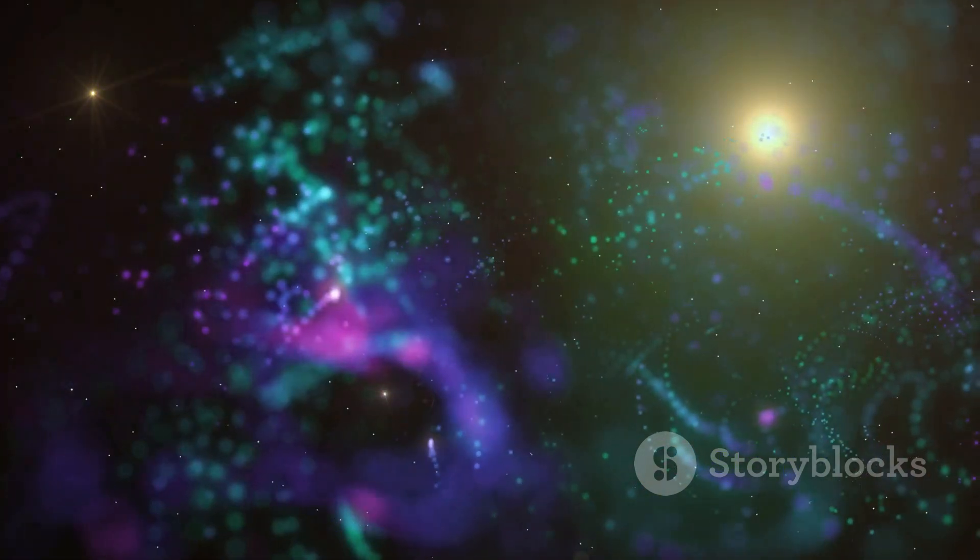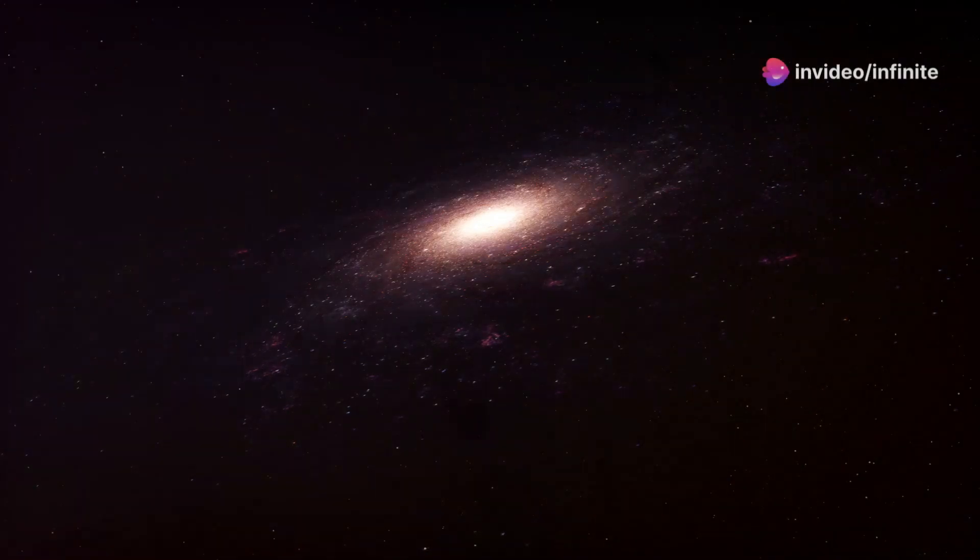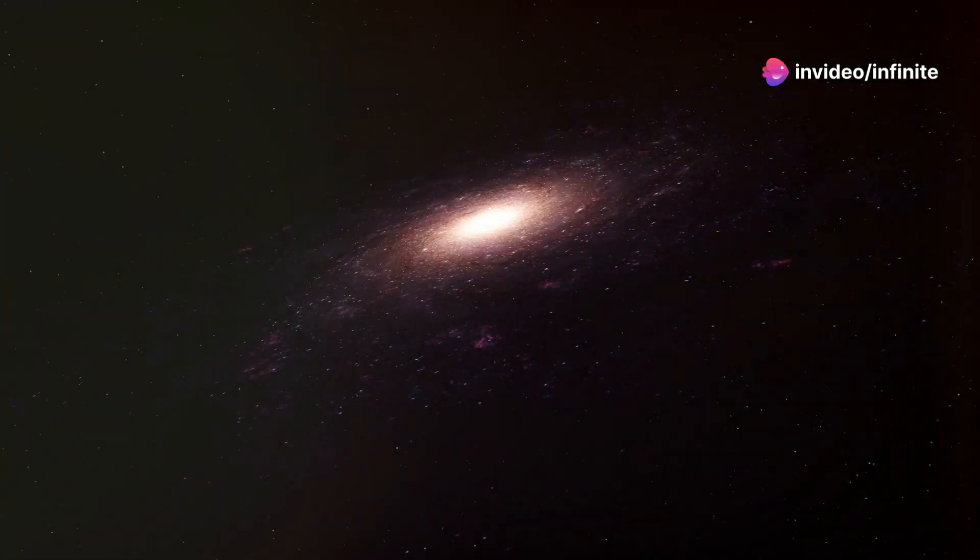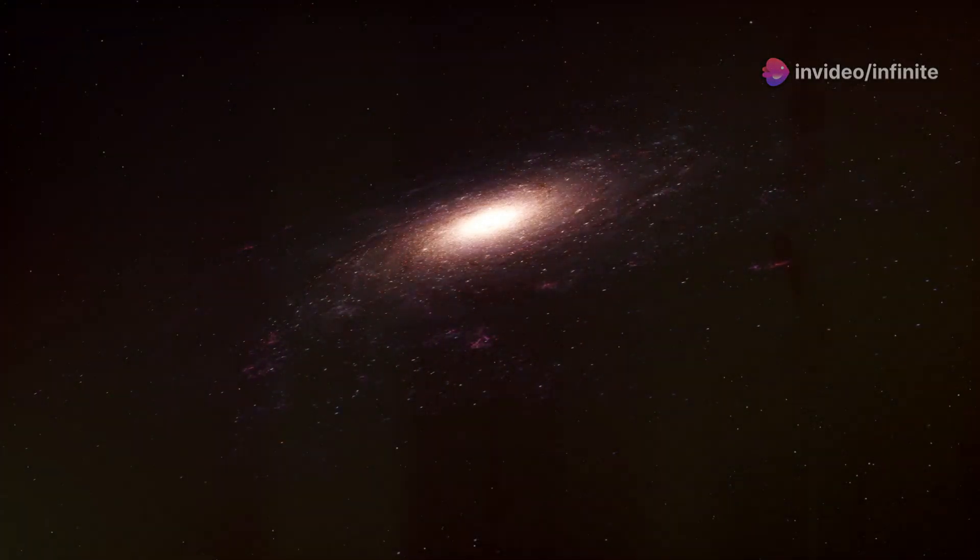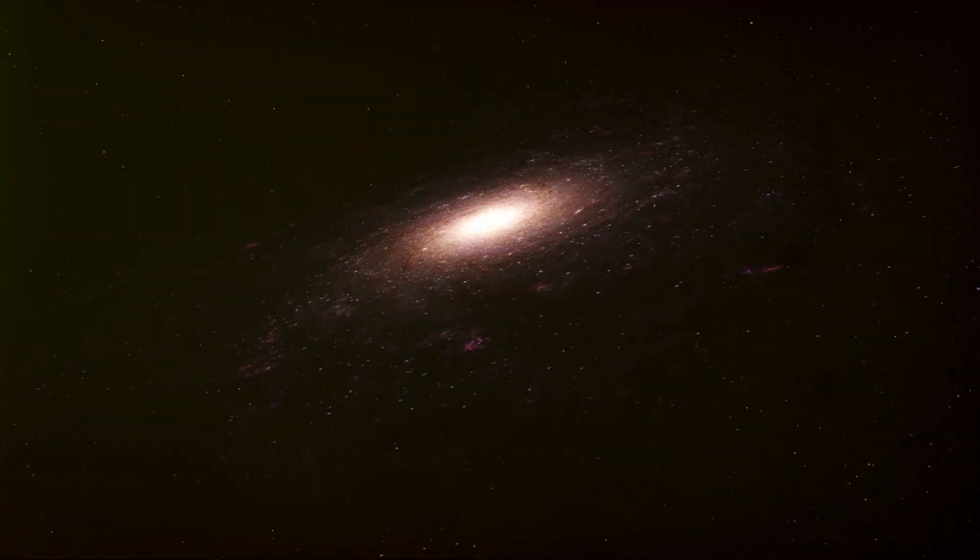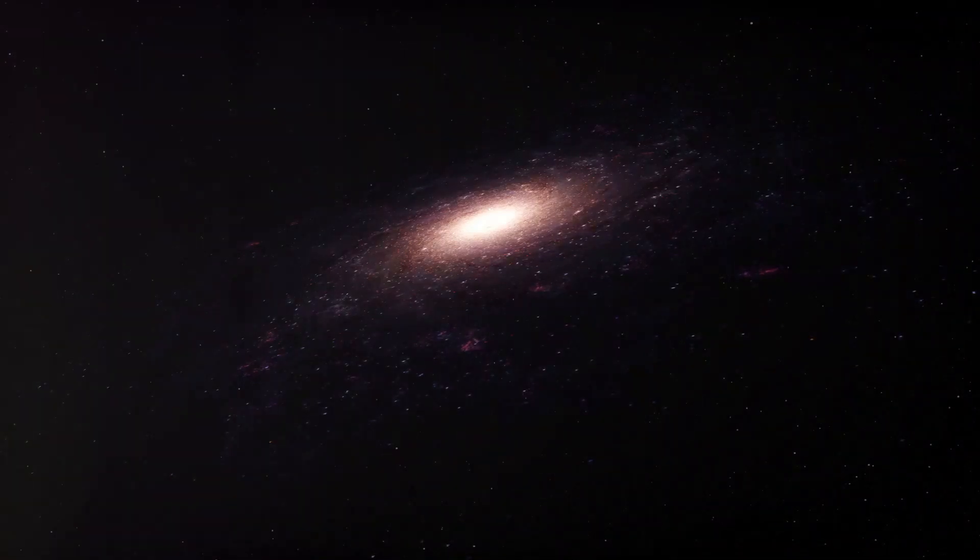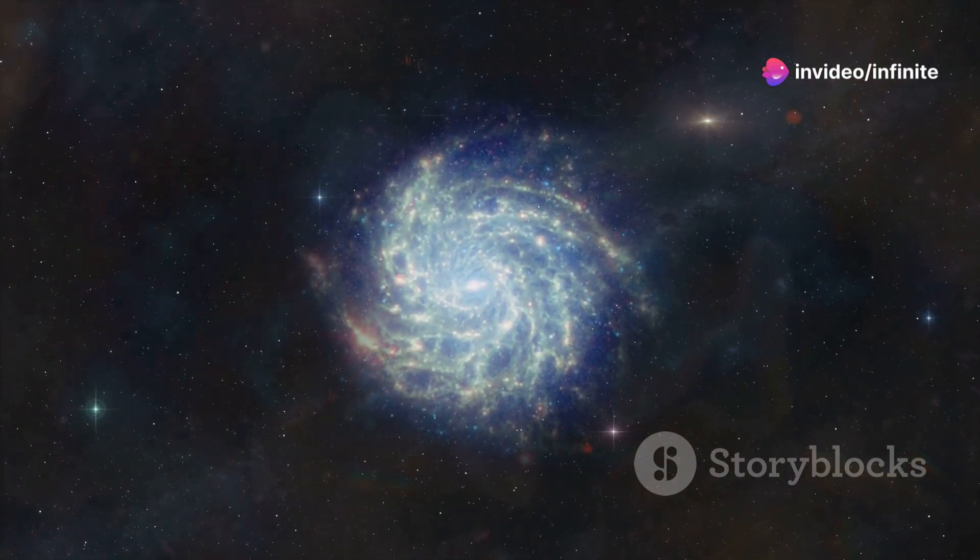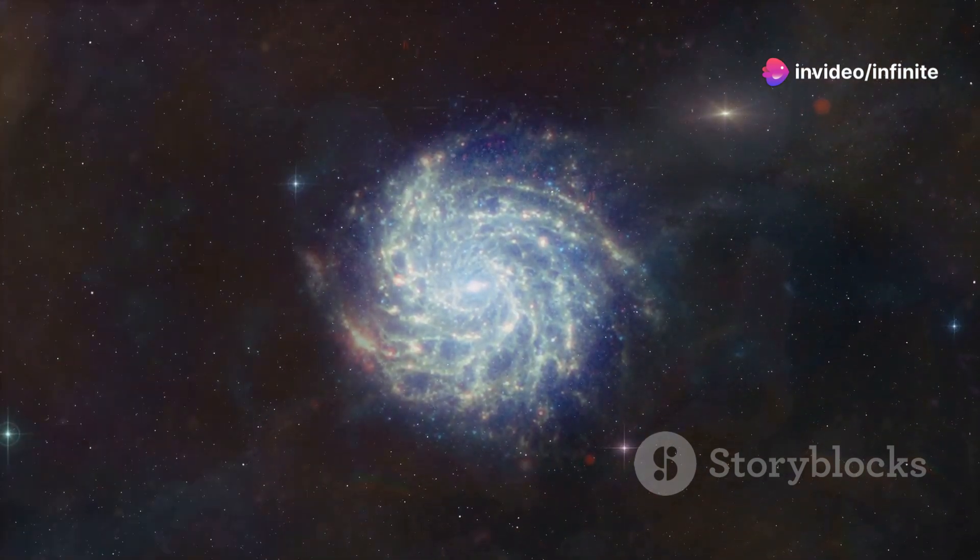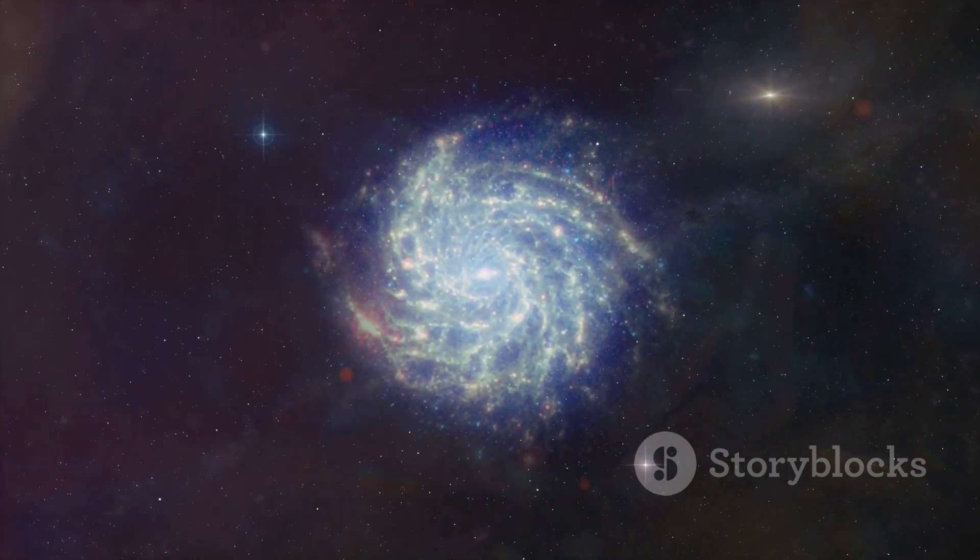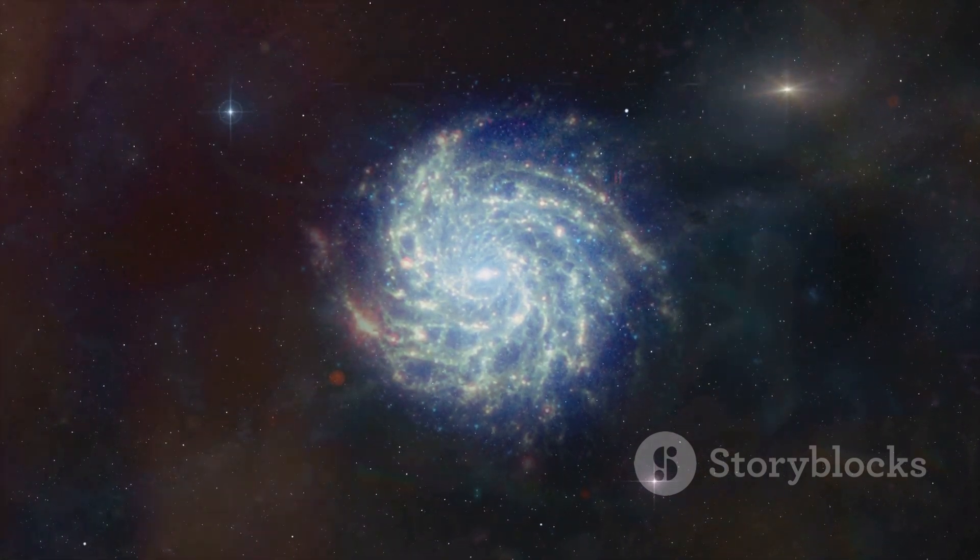This map reveals the intricate cosmic web of dark matter, the scaffolding upon which galaxies are built. It shows how dark matter forms a vast network of filaments and nodes connecting galaxies across immense distances. Dark matter exerts a gravitational pull on visible matter, influencing the motion of stars and galaxies.